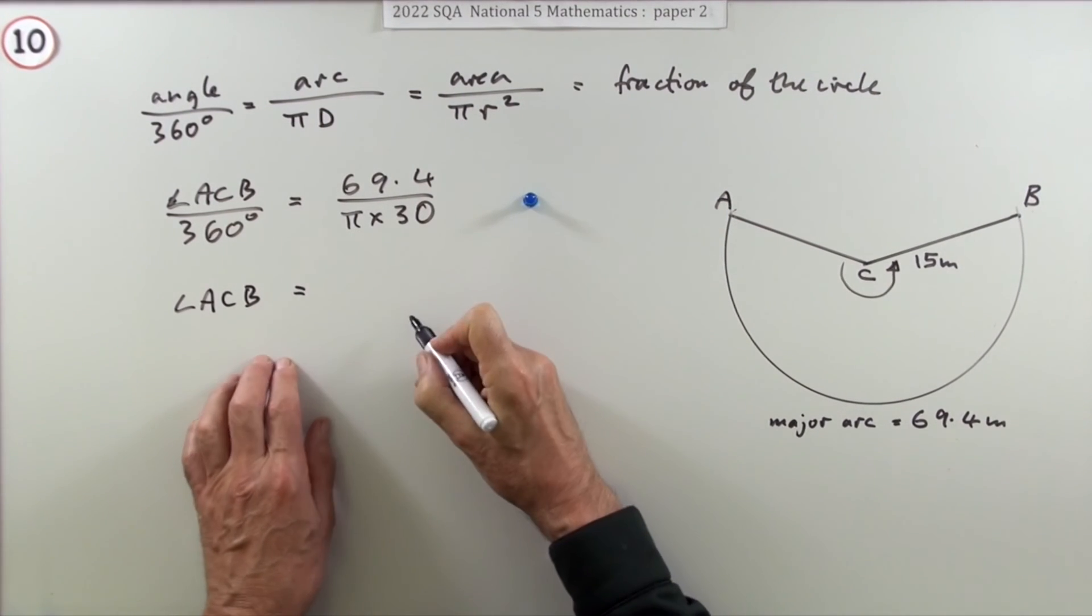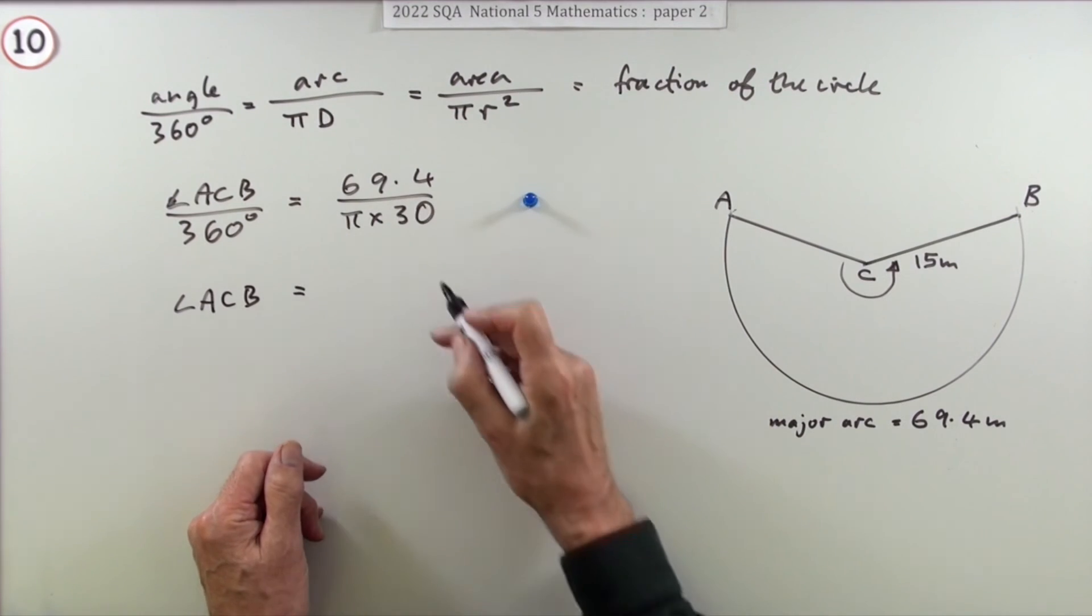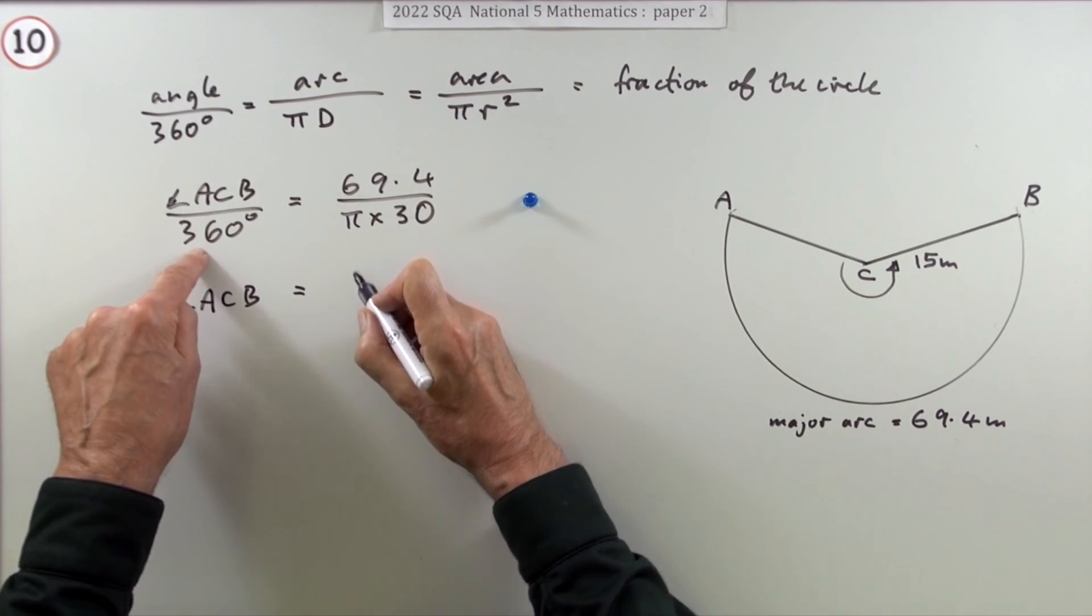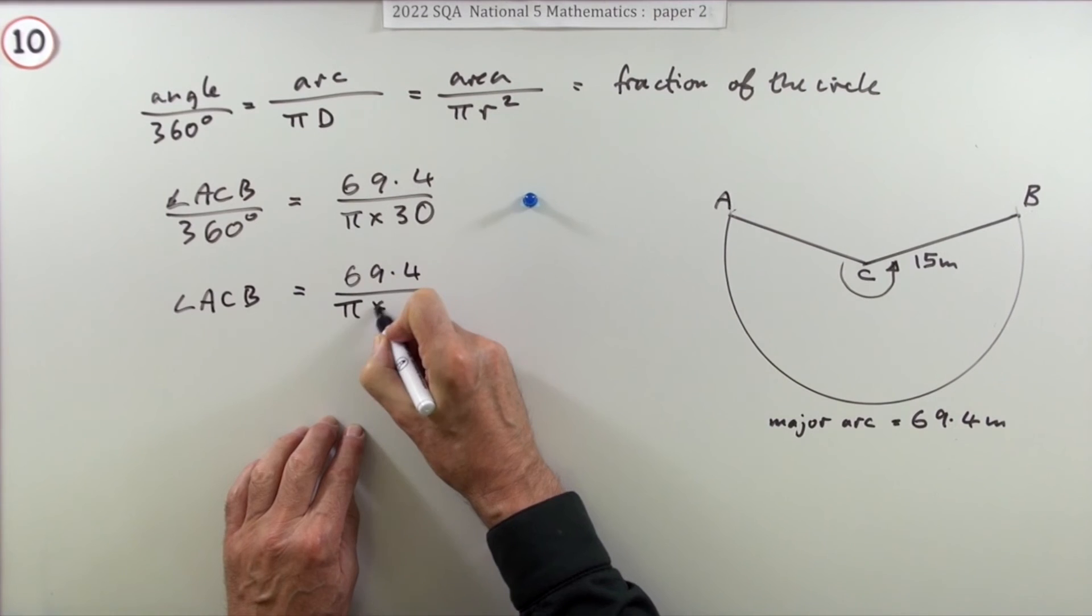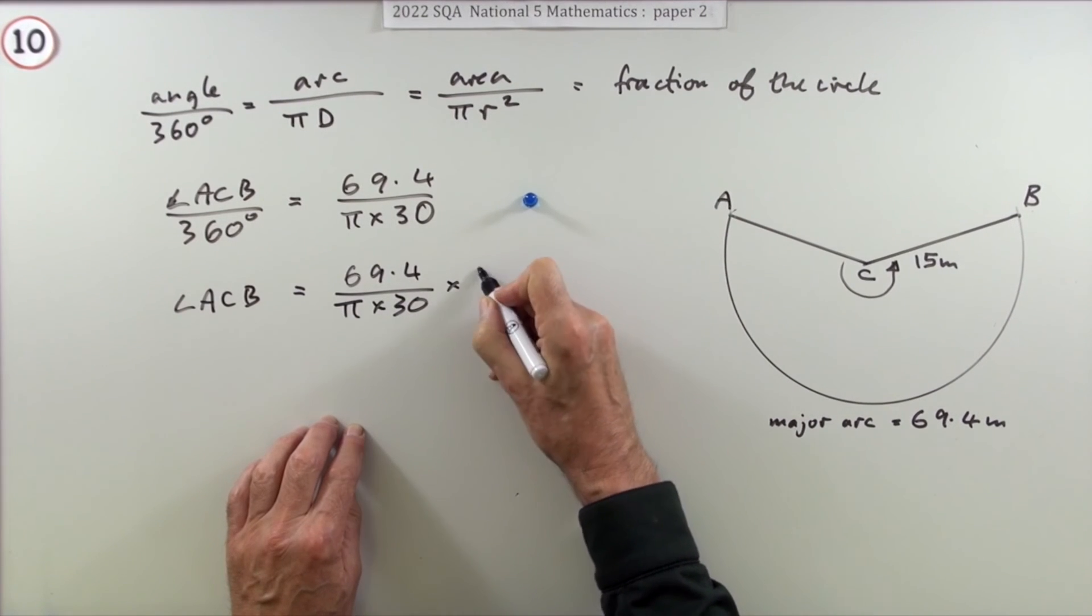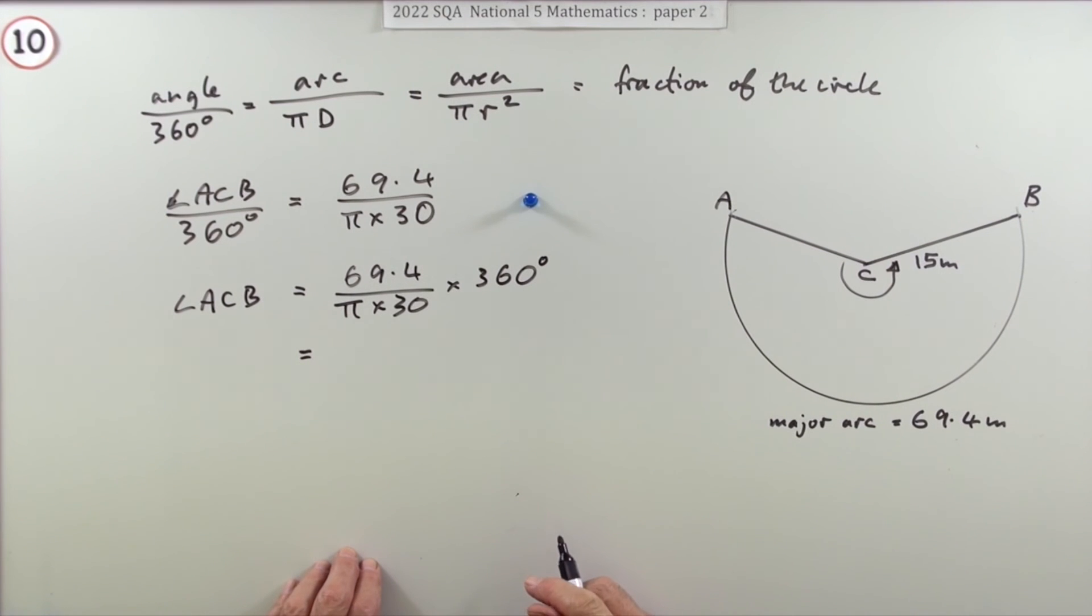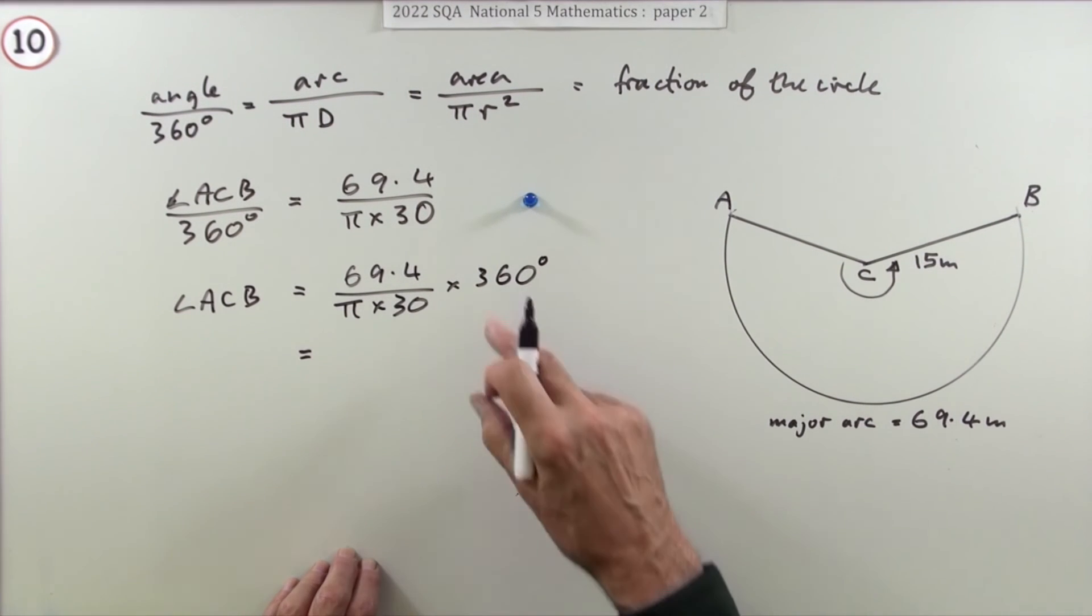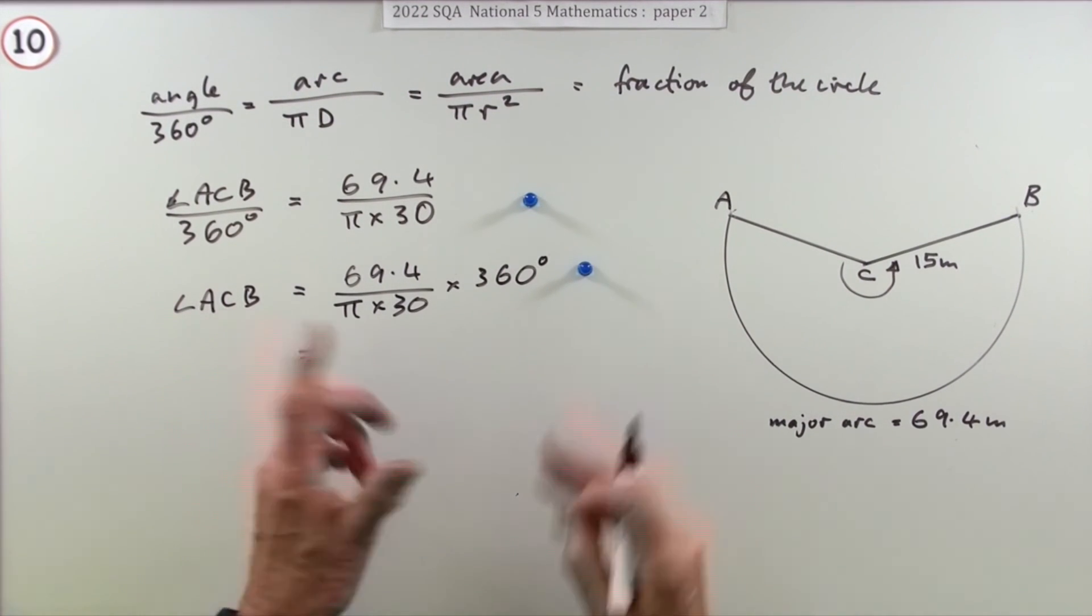That'll be: take that across, 69.4 over π, and leave π alone, times 360, because that's nice and accurate. There's no point introducing inaccuracies unnecessarily. Rearranging it to read angle gets a mark, and now let's just press the buttons for your answer.